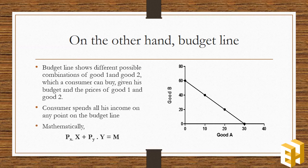Mathematically, it can be derived as price of x into quantity of x plus price of y into quantity of y is equal to the money income m.